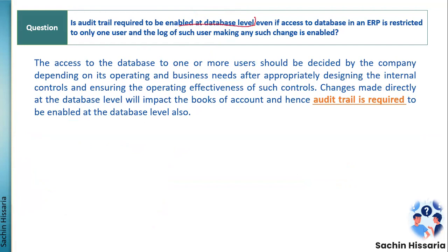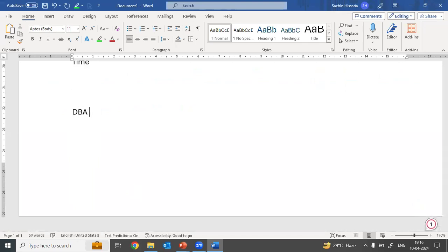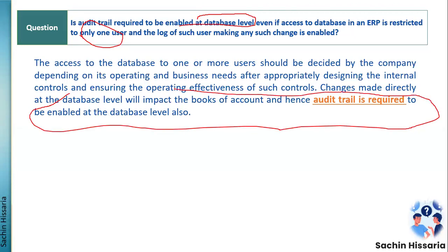Next question: is an audit trail required to be enabled at the database level even if access to the database in ERP is restricted to only one user? Even if there is only one database administrator, the audit trail feature needs to be enabled at the database level. Irrespective of the number of DBAs, the log needs to be enabled at the database level so that any backend changes are logged in the audit trail table.